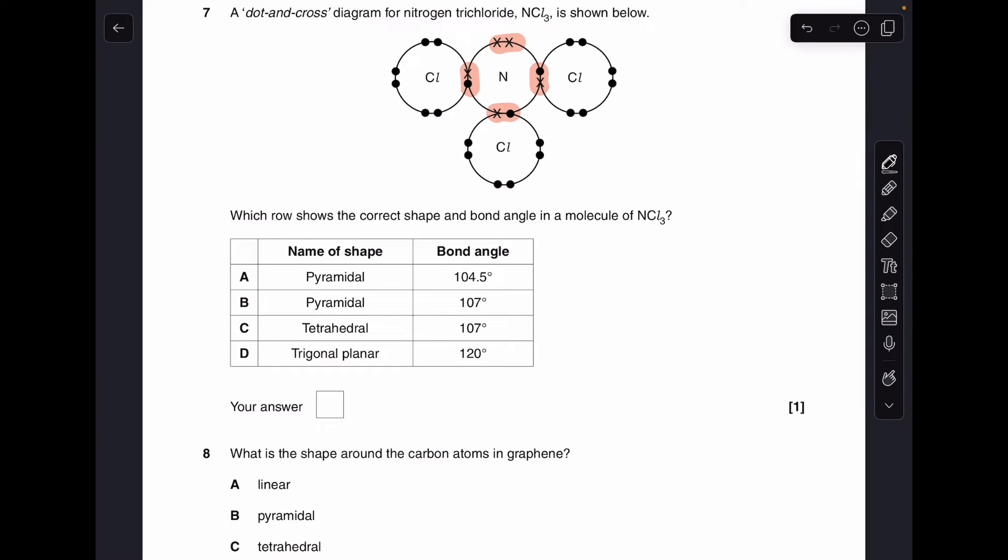Number 7. I've already highlighted the electron regions around the nitrogen. So we've got a total of 4. One lone pair. Three bonding regions. So we can rule out D straight away. It won't be trigonal planar because that's what you get with three bonding regions only. It's definitely not tetrahedral because that's with four bonding regions only. So we're down to A and B, the two pyramidal shapes. So you've got four regions. So your starting angle is 109.5. But that one lone pair, you knock off 2.5 degrees from the angle. So you go to 107. So the answer was B.